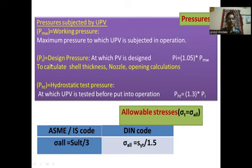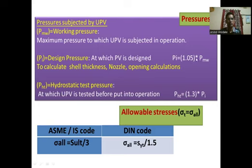Second is the design pressure, denoted by PI. The pressure at which the pressure vessel is designed is called the design pressure. The design pressure is always equal to 1.05 times the working pressure: PI = 1.05 × PMW. This design pressure is used to calculate shell thickness, nozzle, and opening calculations.